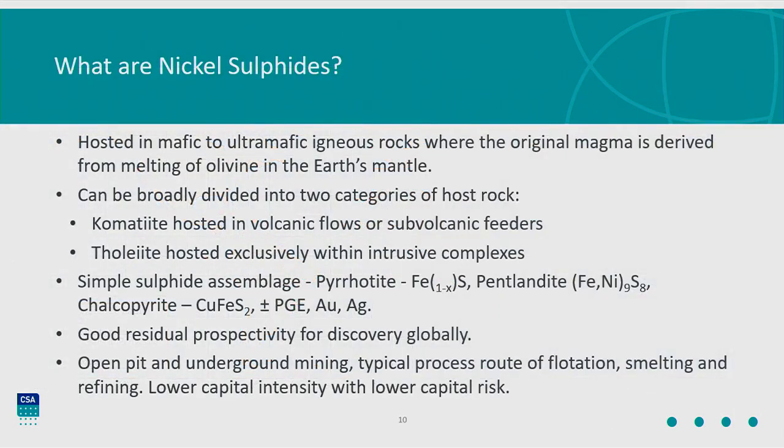What are nickel sulphides? Nickel sulphides involves magmas derived from melting of olivine in the Earth's mantle — that is the ultimate source of nickel. These come to surface in broadly two deposit types: komatiite-hosted types, which we're very familiar with here in Western Australia, and the sill-hosted or intrusive-hosted types, which the rest of the world is probably more familiar with — though we do have some good examples in Nova, Nebo-Babel, and Savannah.